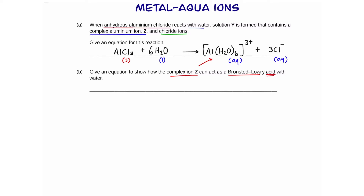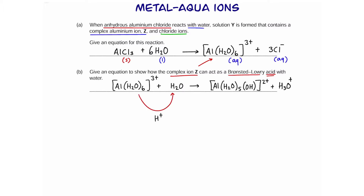In part B, complex ion Z is going to act as a Bronsted-Lowry acid when reacting with water. It's going to lose a hydrogen, and water is going to gain that hydrogen. That means aluminium initially had six water molecules; now it's going to have five water molecules and one hydroxide. So aluminium is acting as an acid, and water is the base.